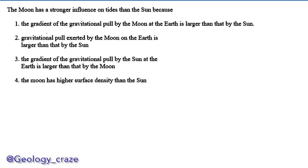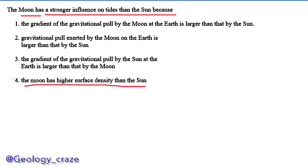The next question: the moon has a stronger influence on tides than the sun because — the fourth option says the moon has higher surface density than the sun, which is not the relevant factor. It is related with the gravitational pull gradient. The gradient of gravitational pull by the moon at Earth is larger than that of the sun — this is the right option.